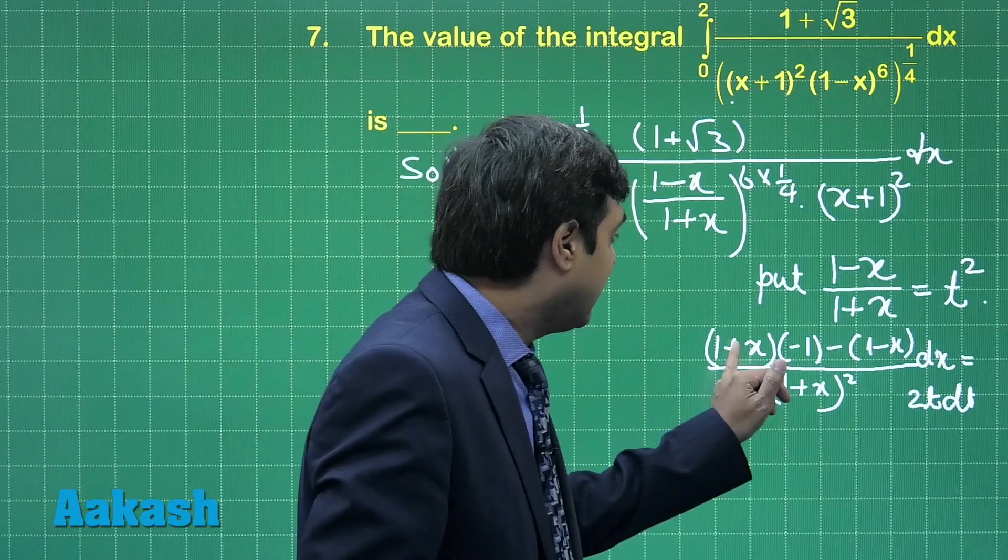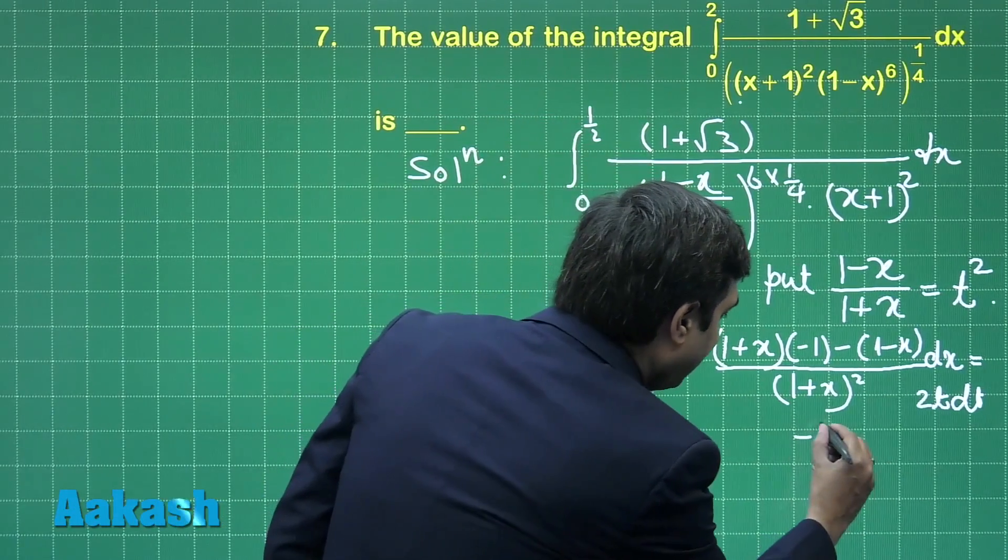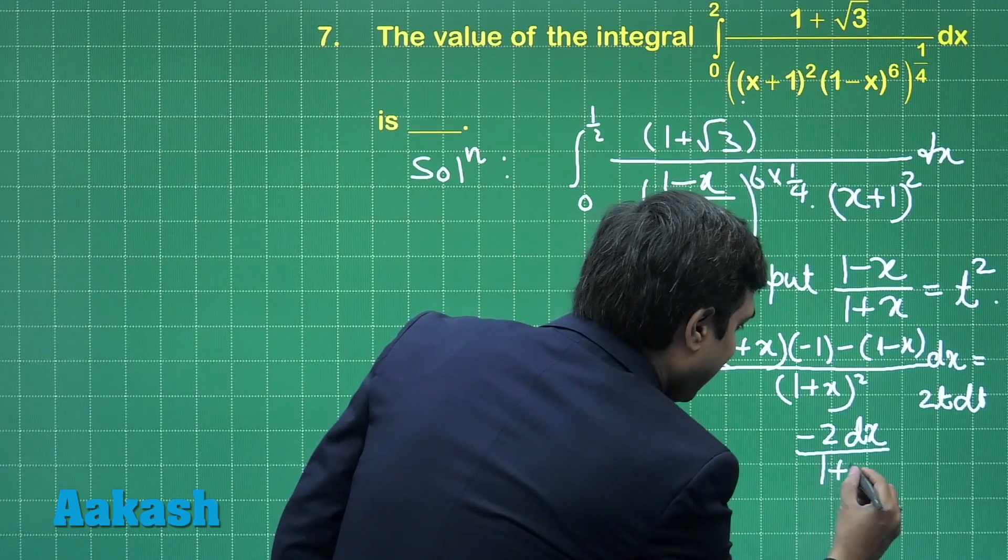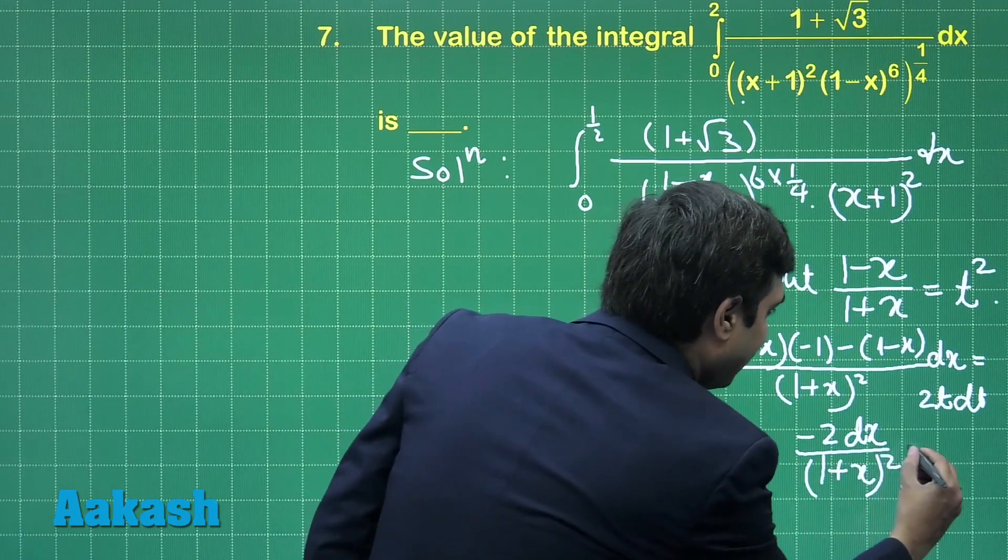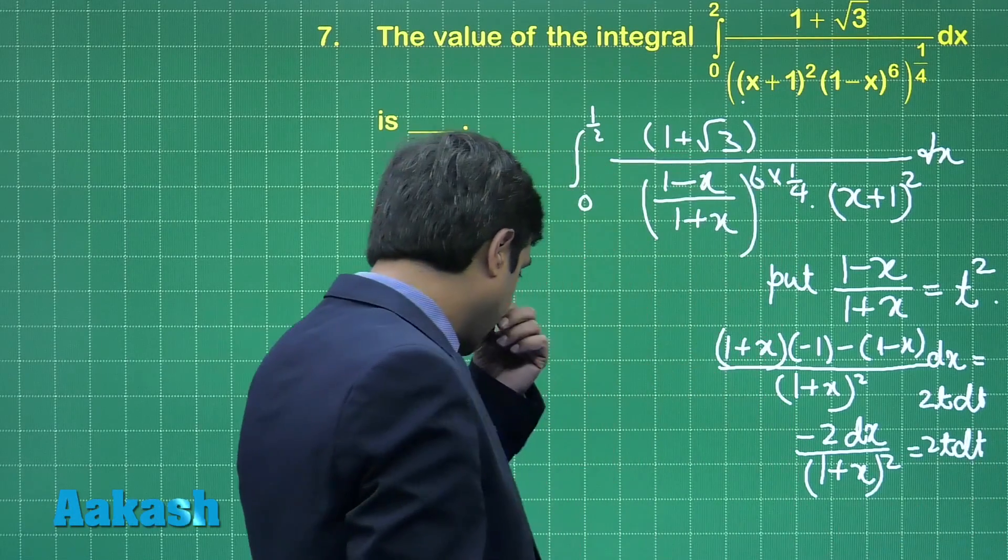Simplifying, we can see that here x is cancelled. We are left with simply minus 2 dx upon (1 plus x) whole square is equal to 2t dt. 2 can also be cancelled out.